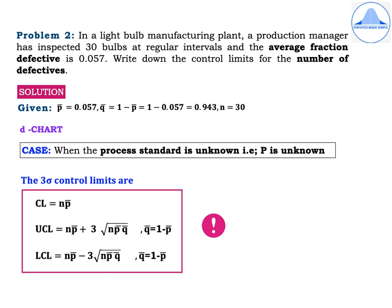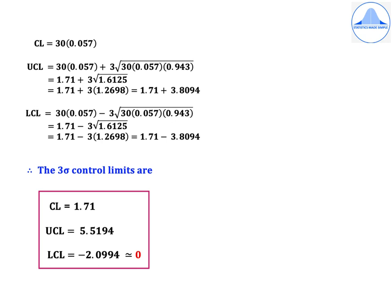The 3-sigma control limits for a D chart are: CL = NP-bar, UCL = NP-bar + 3√(NP-bar × Q-bar), and LCL = NP-bar − 3√(NP-bar × Q-bar). Substituting: CL = 30 × 0.057. UCL = 30 × 0.057 + 3√(30 × 0.057 × 0.943) = 1.71 + 3.8094. LCL = 30 × 0.057 − 3√(30 × 0.057 × 0.943) = 1.71 − 3.8094.